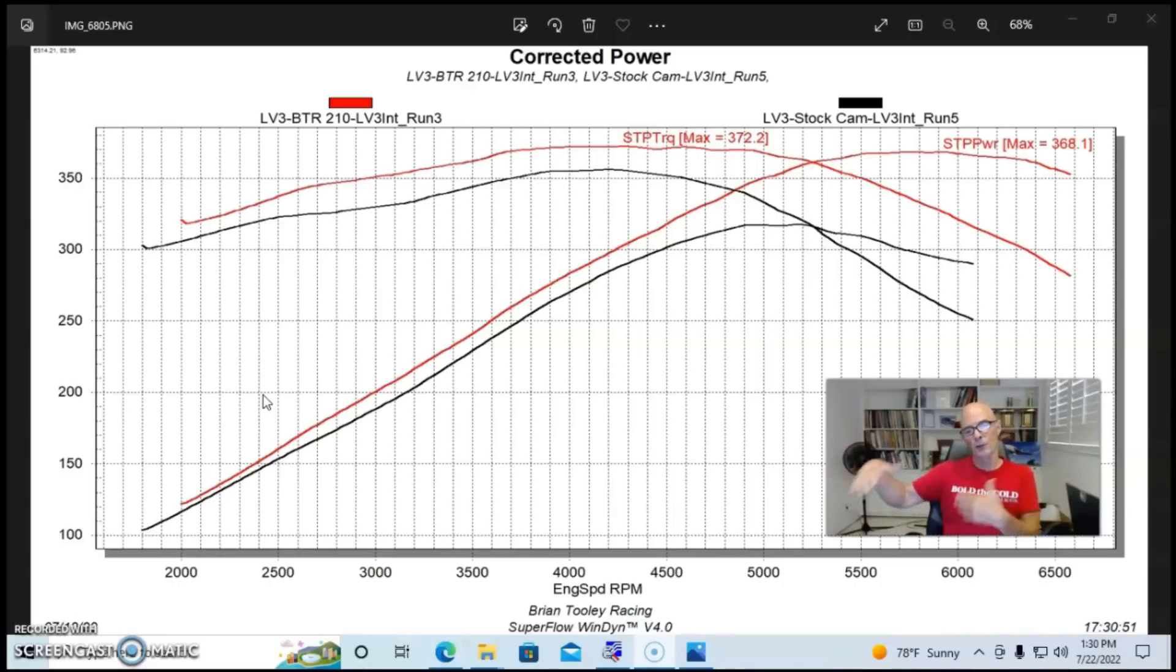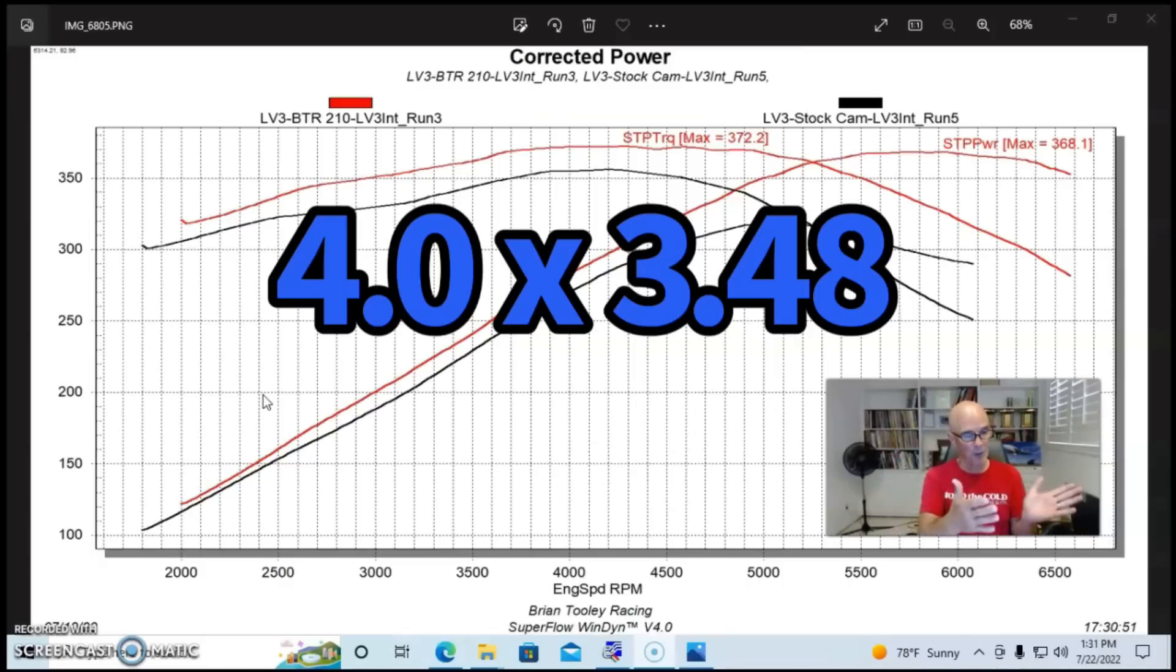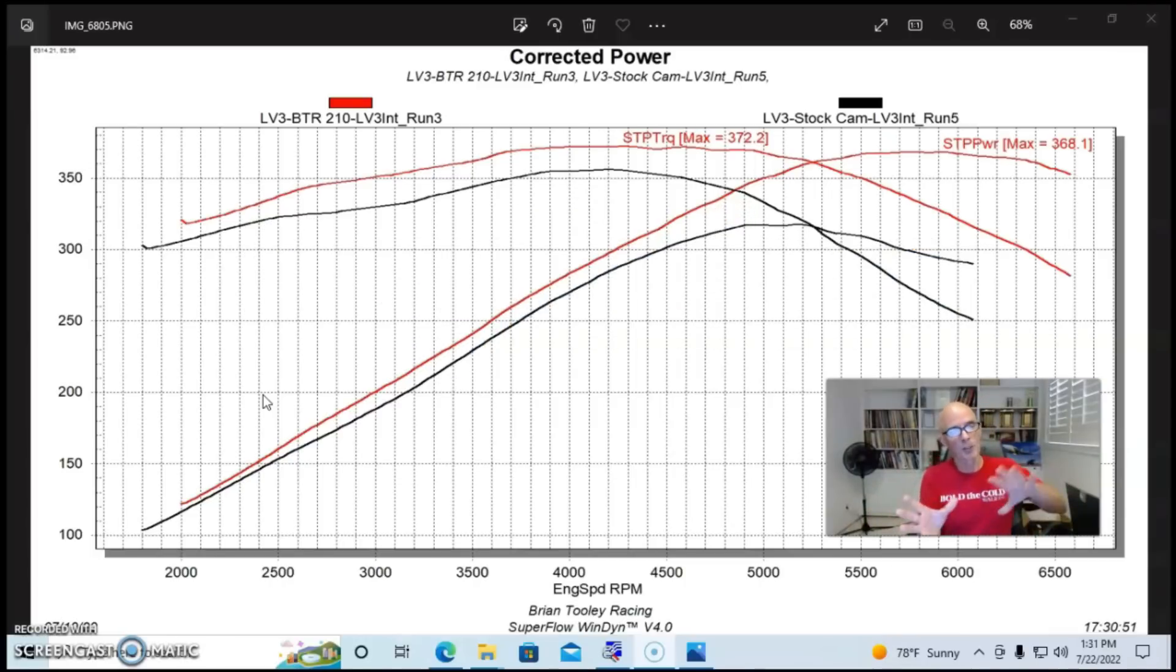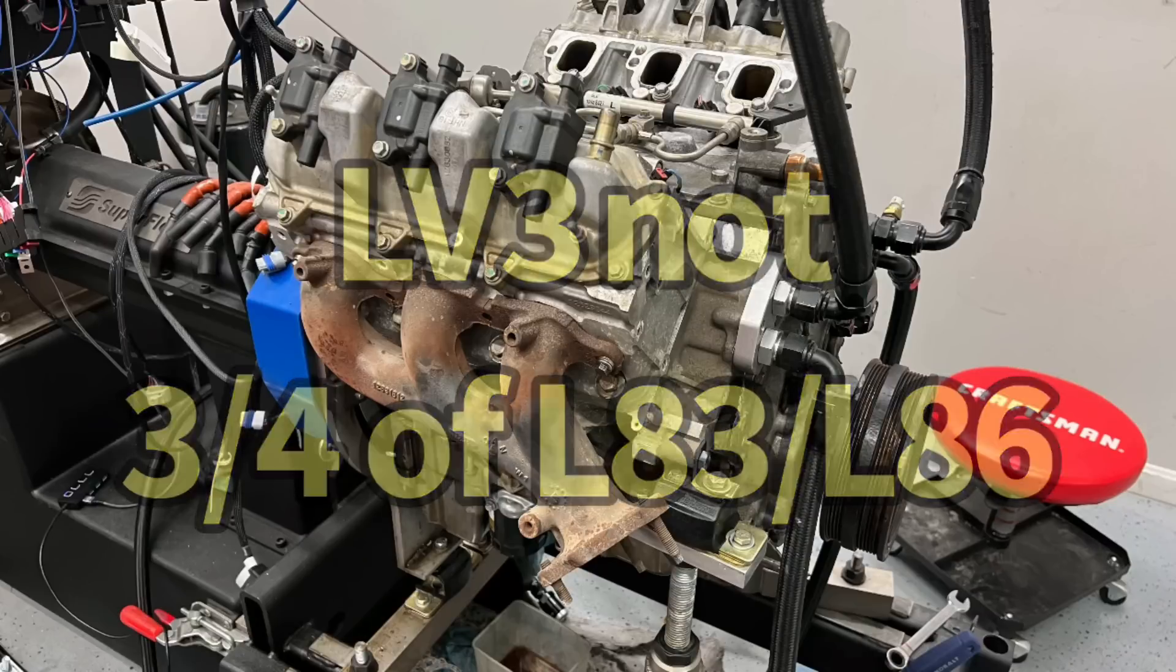If you take a look at the old Vortec, the 4.3 liter V6 that they used to run, that one made about 195 horsepower, but it was actually three quarters of a 350 V8 because it shared the same bore and stroke. It had a four inch bore and a 3.48 inch stroke. It just had fewer cylinders, but this new LV3 isn't like that compared to its bigger V8 brothers. But as we'll see, it has a lot going for it.